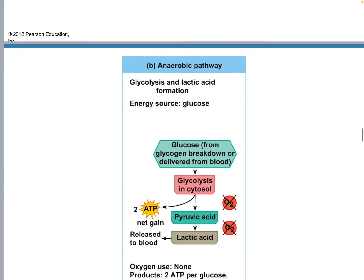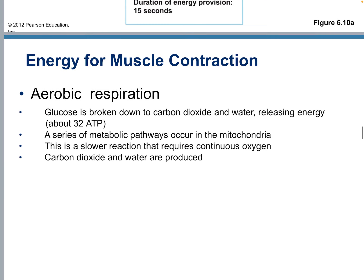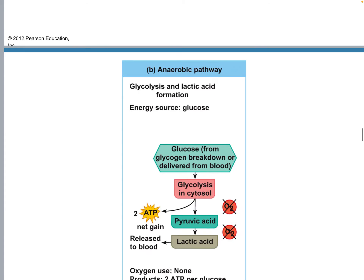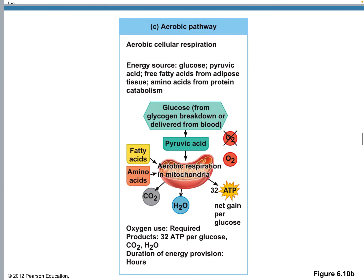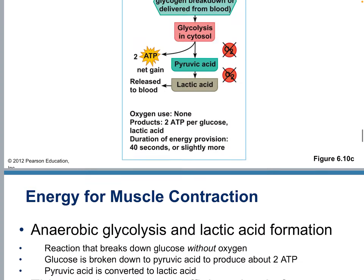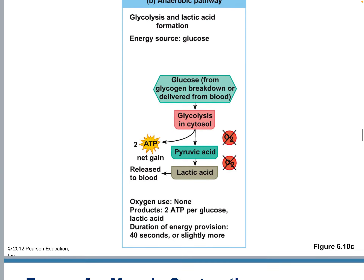This is the aerobic pathway — this is how you want it to happen. It produces 32 ATP from glucose. You go to pyruvic acid, and if you have oxygen, you can turn that pyruvic acid into many more ATP in the mitochondria. If you do not have oxygen, you must convert that pyruvic acid into lactic acid.